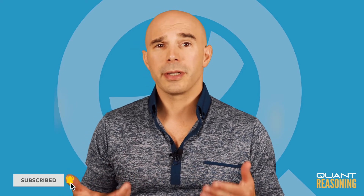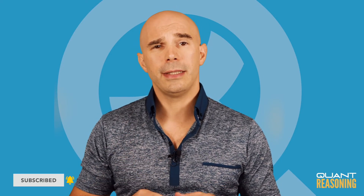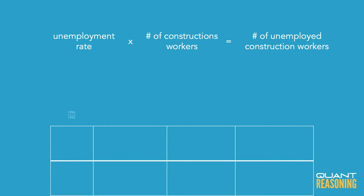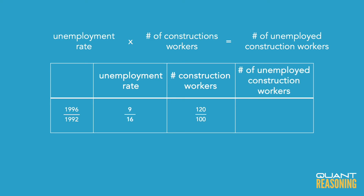Now that we've established the multiplicative relationship among the three elements, we can set up a ratio of 1996 to 1992 and go through the three elements one by one. For the first ratio, the unemployment rate, it looks like we have 9 over 16. For the second one, we have 120 over 100, because it went up by 20%, so I'm using 100 as the starting point going up to 120.